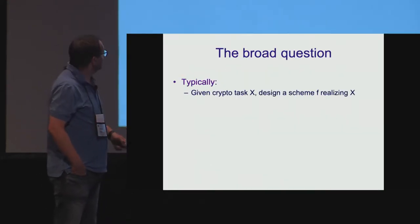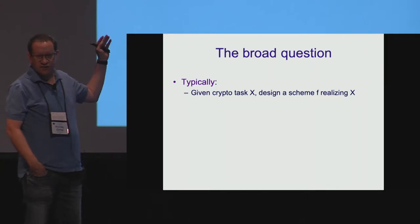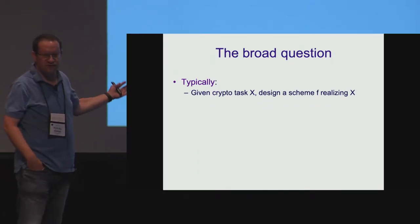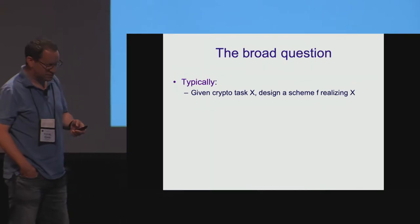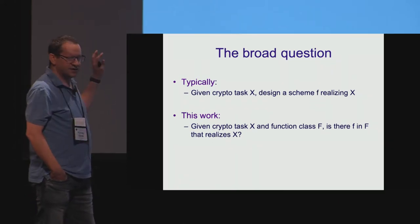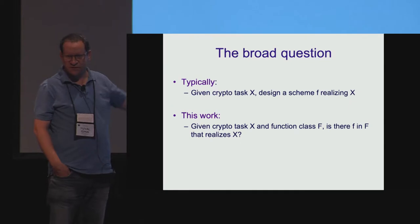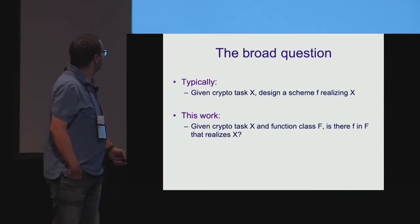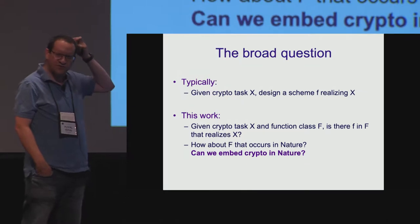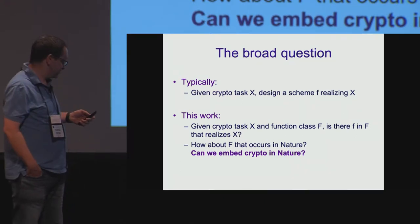Let me introduce first the broad question that this can be seen as a special case of. Typically, we have a crypto task X that we want to implement, and we're trying to design a scheme for this task, either trying to minimize assumptions or optimize efficiency in some sense. This work fits along the line of taking a crypto task X and a function class F and trying to fit an implementation of X into the constraints imposed by F. In particular, we're interested in classes F that are somehow realizable by nature—you can think of it as a question of whether we can embed crypto in nature.